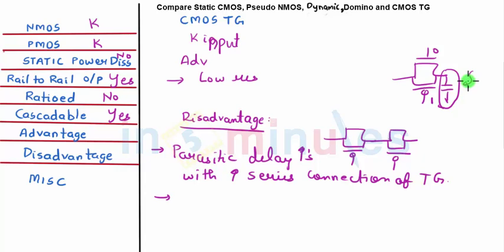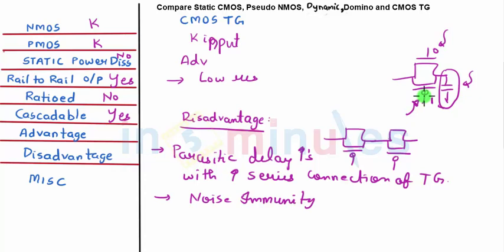Another drawback: suppose a transmission gate has C=0 and C̄=1, meaning the output is tristated and must hold its charge. The output becomes susceptible to noise — a slight noise on any of the control signals could allow an incorrect input to pass through, corrupting the held value.